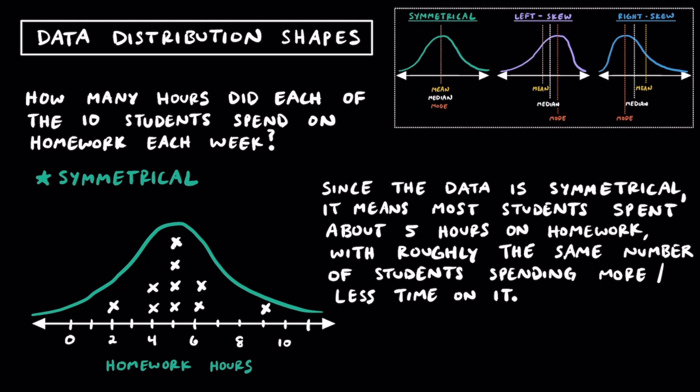That wraps up this video on statistical questions and shapes of data distributions. Hopefully you now understand what a statistical question is, how you can get different types of responses, and the three different shapes we focused on. When we ask a statistical question, we collect data from different people or sources, plot those points along a horizontal number line, and see what kind of shape they form. The three types are symmetrical, left skewed, and right skewed. Symmetrical data has the center in the middle; left skewed data means most of the data is to the right; and right skewed data has most of its data concentrated to the left. I hope you found this video helpful, and as always, keep up the great work — I'll see you in the next one.